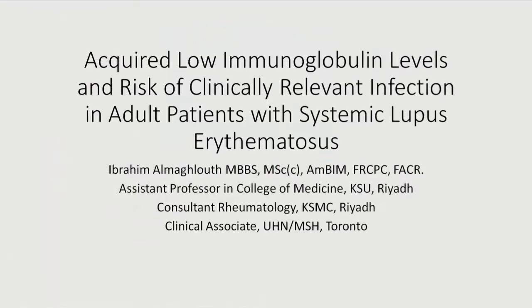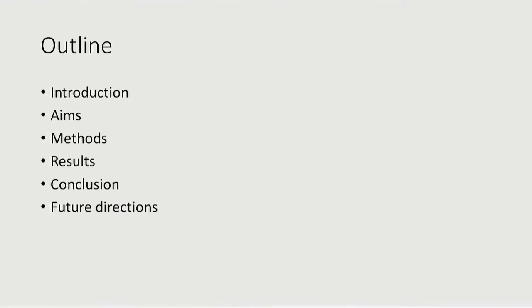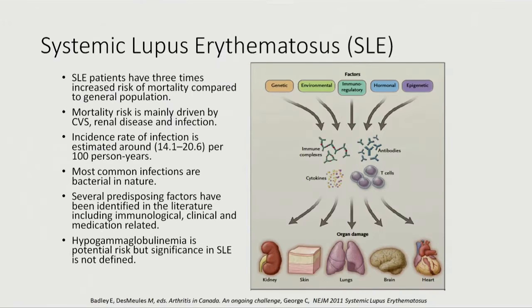The topic is really about the risk of infection in patients with systemic lupus erythematosus adult patients, and particularly we're focusing on the acquired low immunoglobulin. I have no relevant disclosures, and the outline goes over introduction, aims, method, results, conclusion, and future direction.